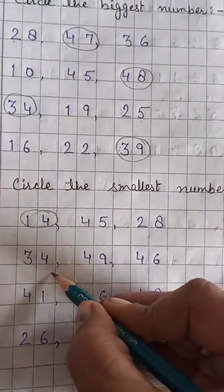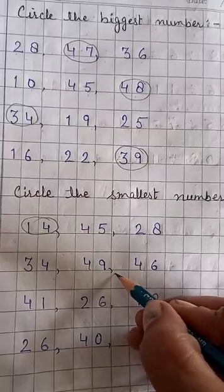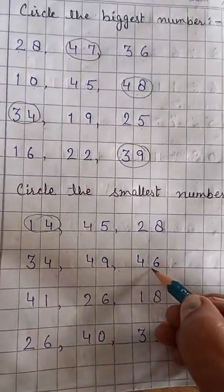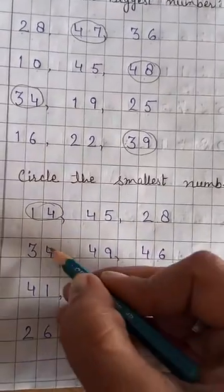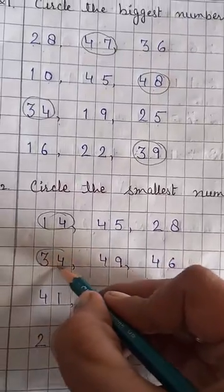Next, 34, 49 and 46. Which one is the smallest? Yes, 34. Circle it.